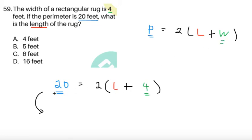So all we have to do is just solve for L. Divide both sides by 2, we're going to get 10 equals L plus 4. And then just solve for L, we're going to get that L equals 6. So that simple. We have choice C for this answer.